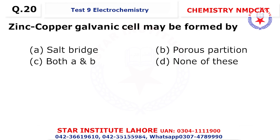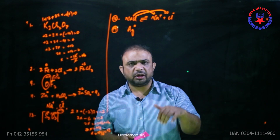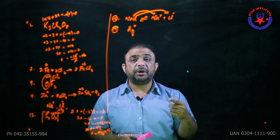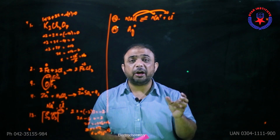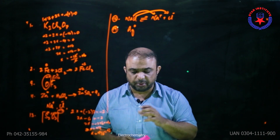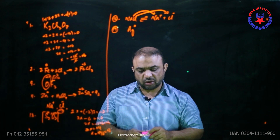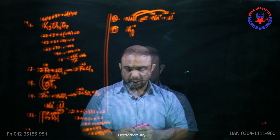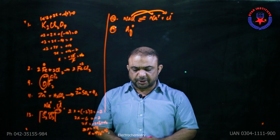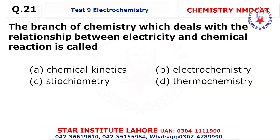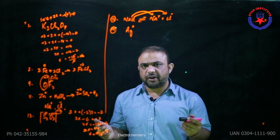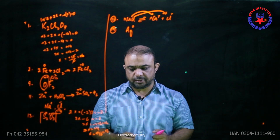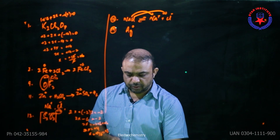Question number 20: a zinc-copper galvanic cell may be formed by a porous partition or by two separate beakers connected by a salt bridge. So the choice is both salt bridge as well as porous partition. Question 21: the branch of chemistry that deals with the relationship between electricity and chemical reactions is called electrochemistry.